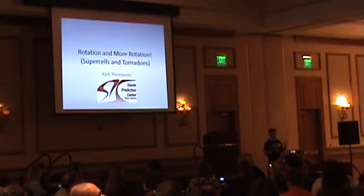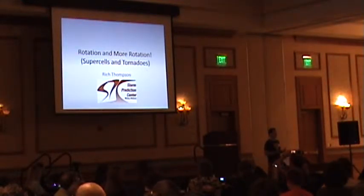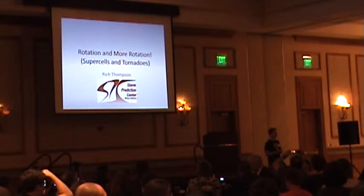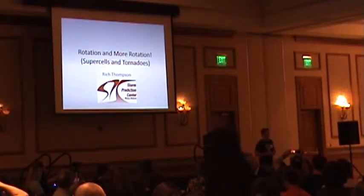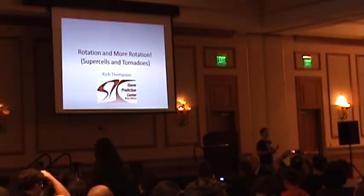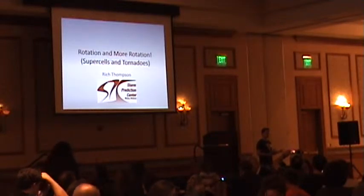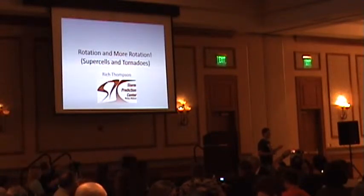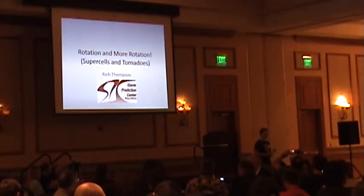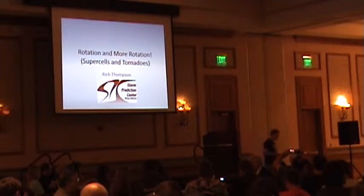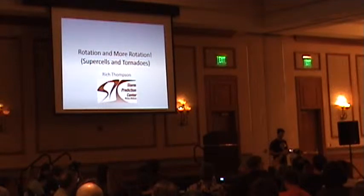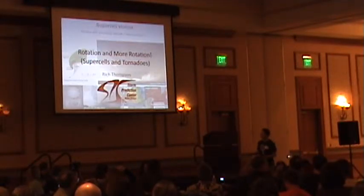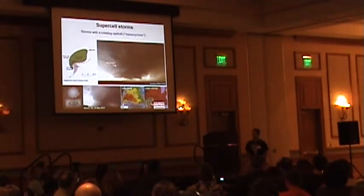The idea is that you can look at weather information and figure out if this environment supports a rotating storm and whether it will be long-lived. After that, we can talk about tornado genesis. We'll have plenty of questions at the end, and I'm hoping that when you walk out of here, you'll have a better appreciation for what we're going to be able to do with that. Alright, supercells.